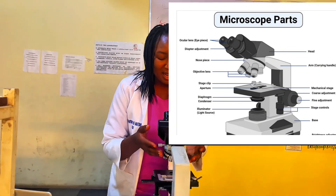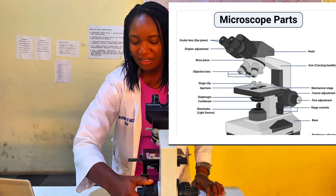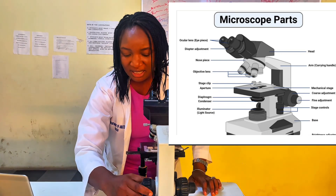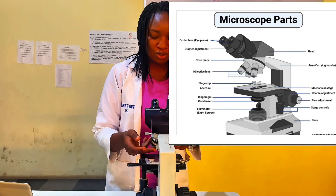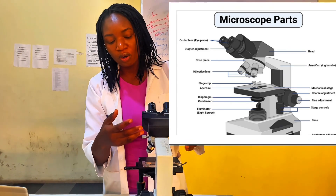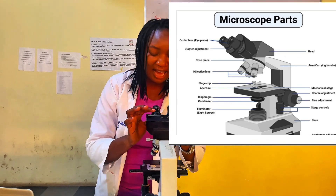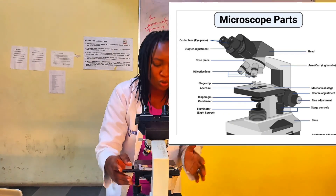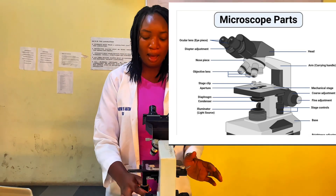The objective lens magnifies the image, and the coarse and fine adjustment knobs are the parts of the microscope that make the image focused. This focused image passes through the objective lens and via the nosepiece, and the nose tube connects both the objective lenses and the eyepiece, and then you can view your tissues or specimens under the microscope. We also have the stage knob, which moves the stage front and back.